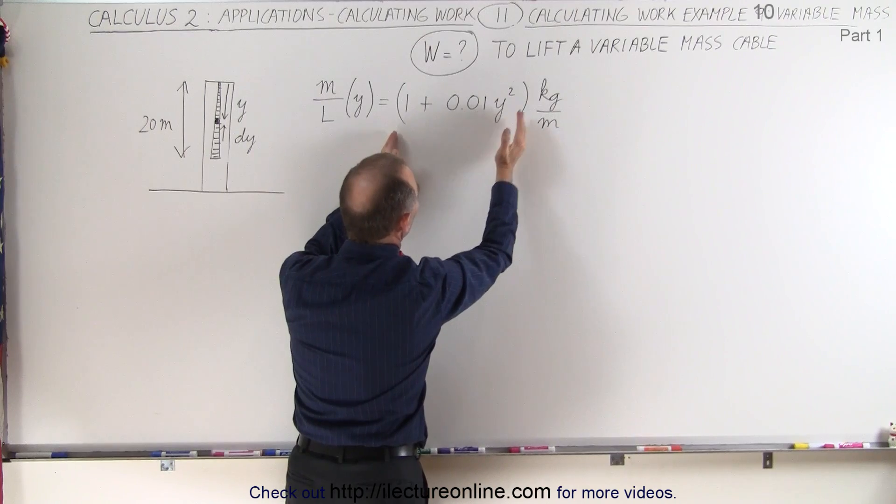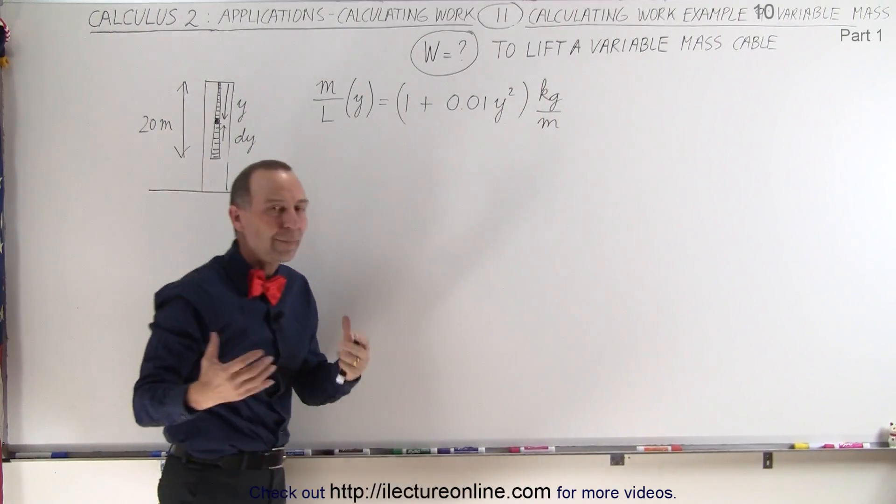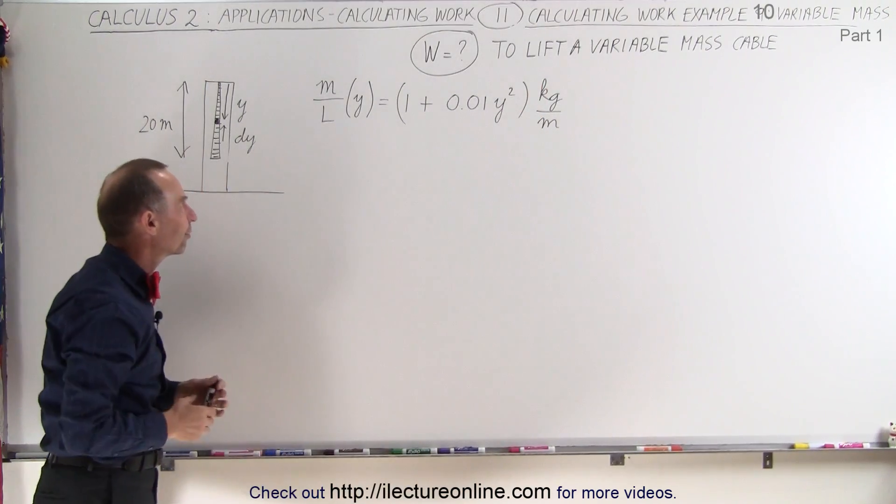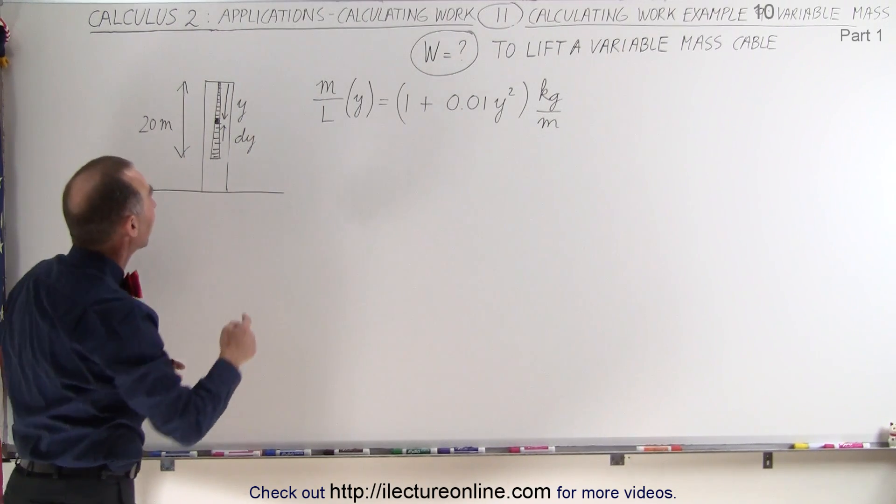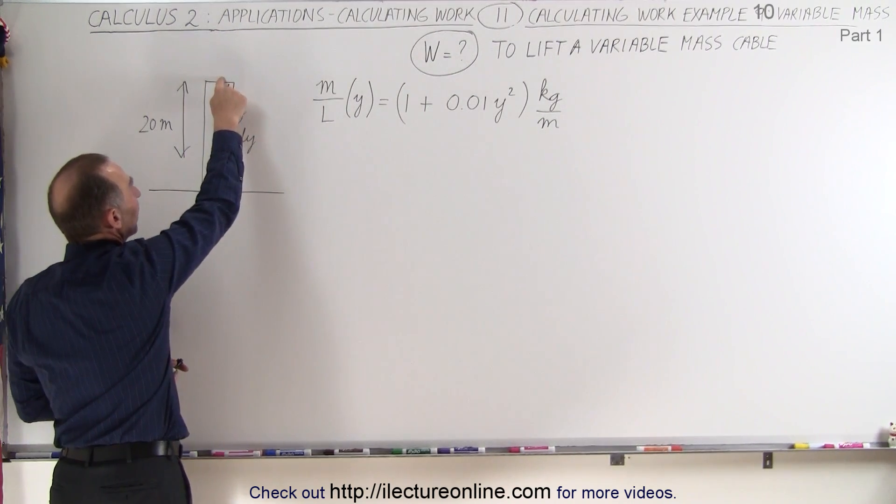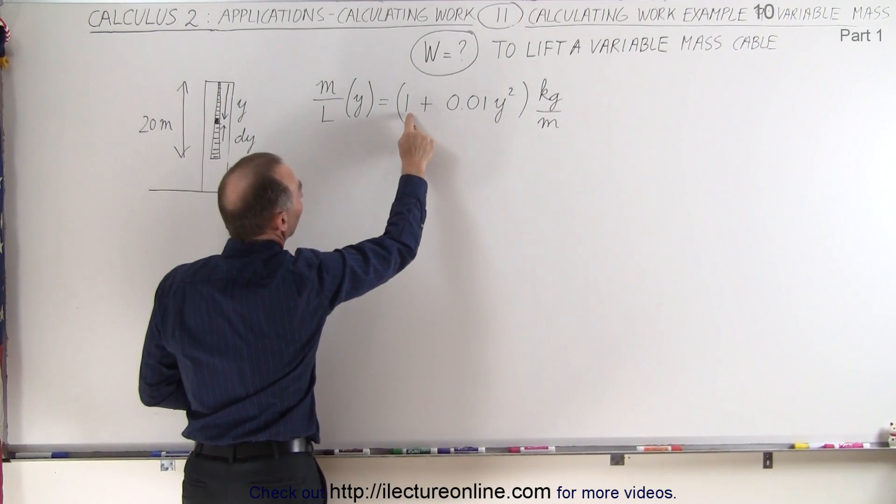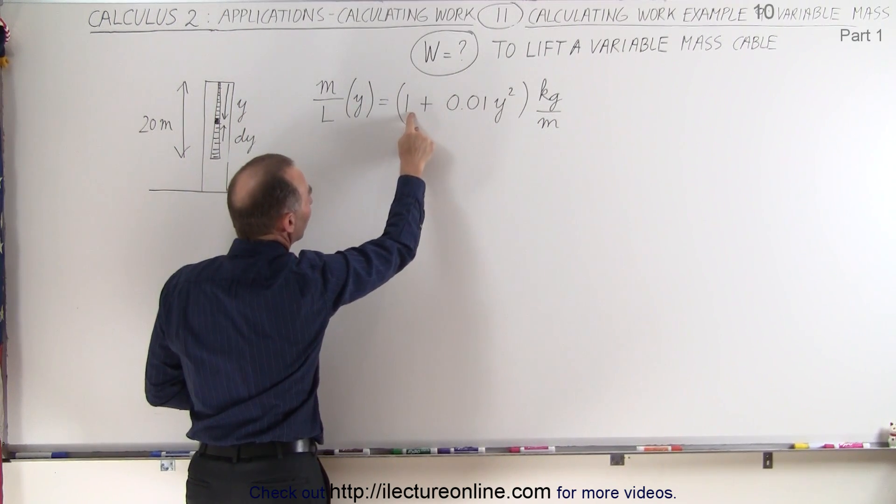And of course, everything will be in terms of kilograms per meter. The mass per unit length will be in kilograms per meter. So that's how the cable is defined, which means that at the very top, when y is equal to 0, the cable has a mass of 1 kilogram per meter.